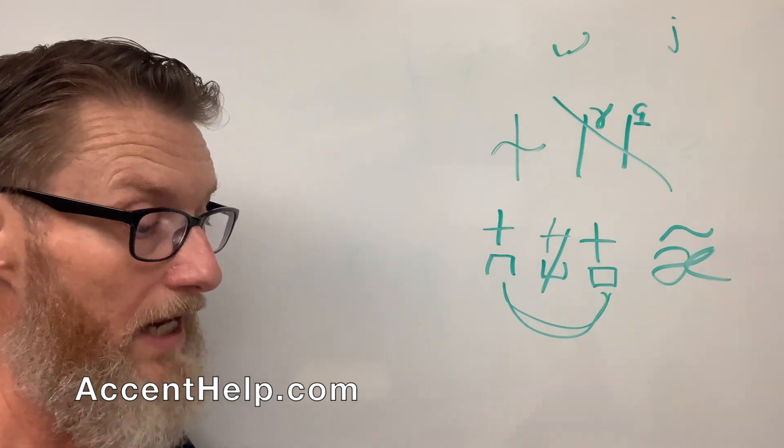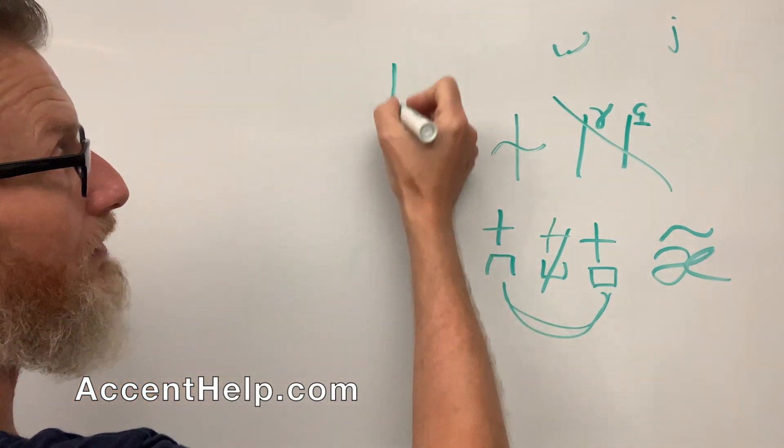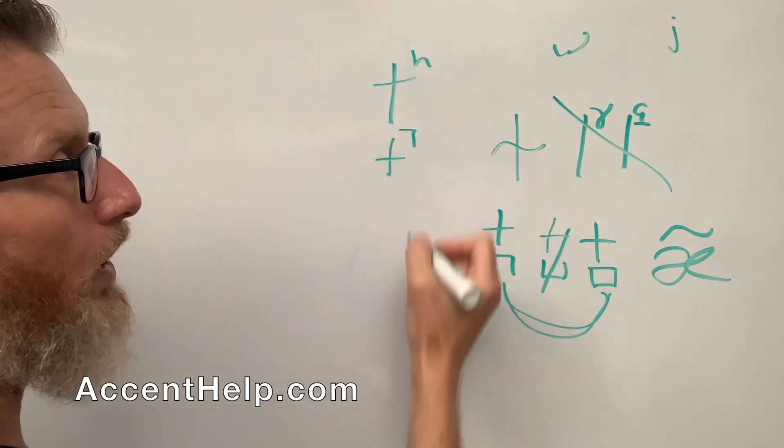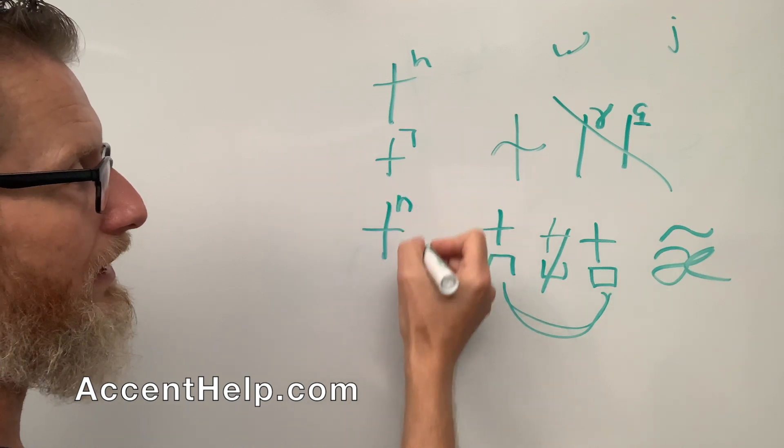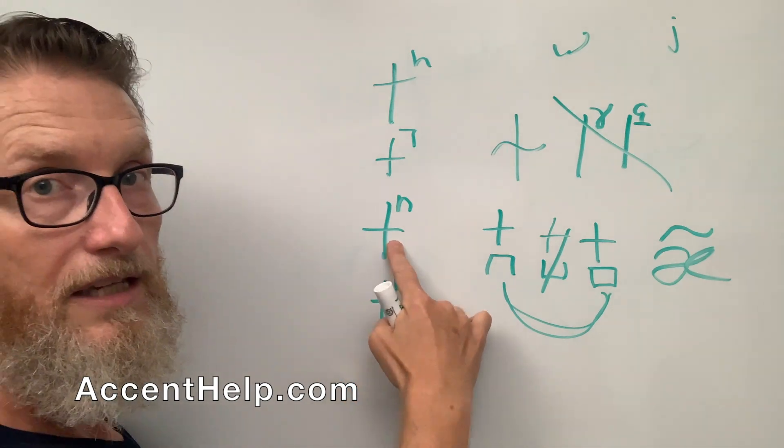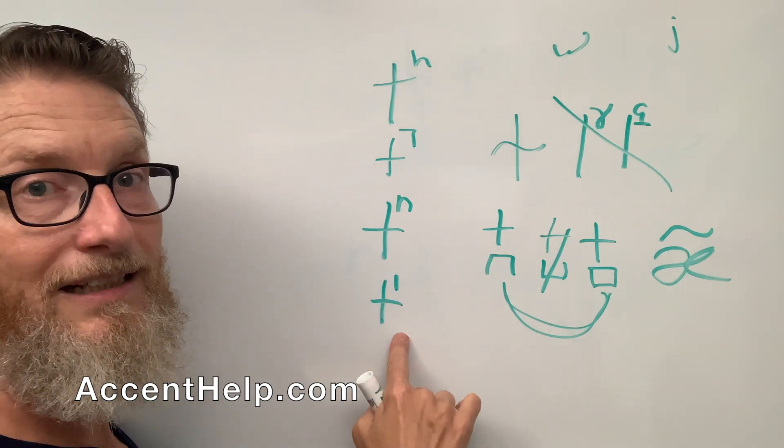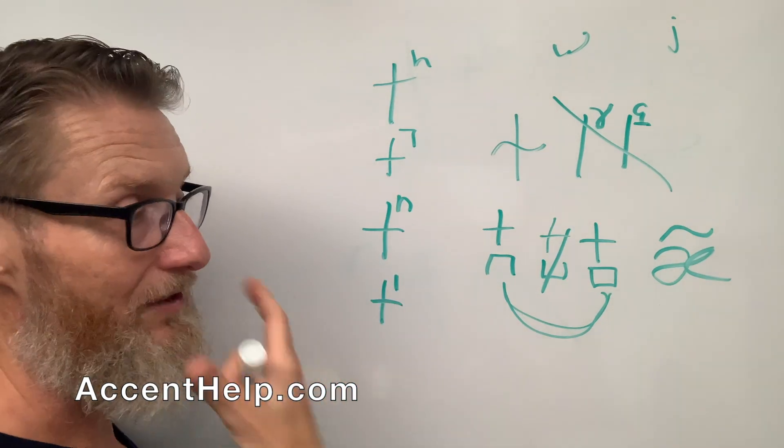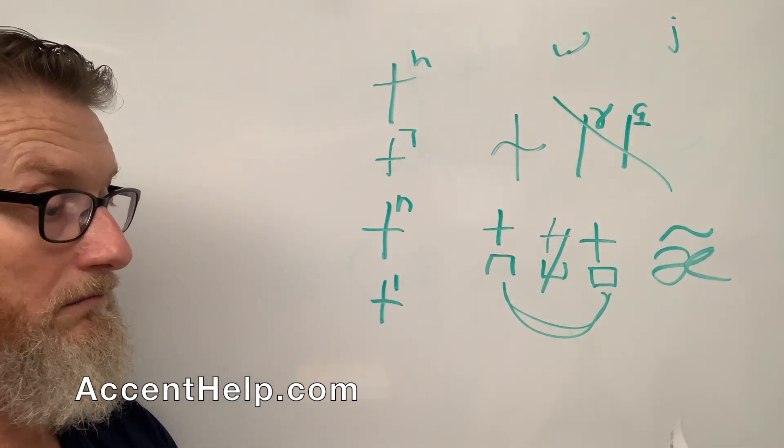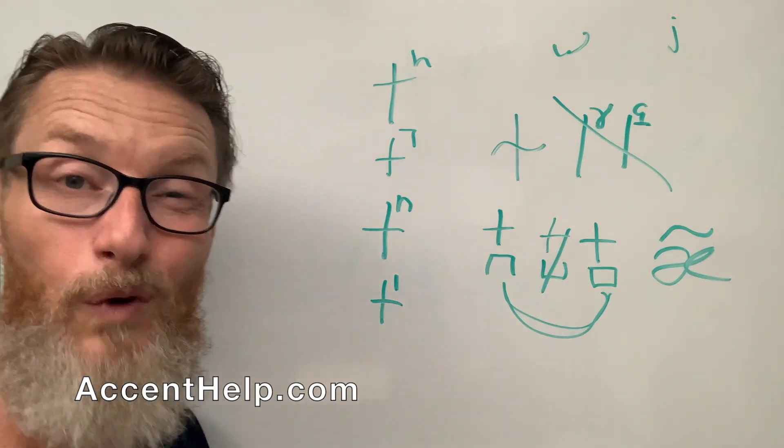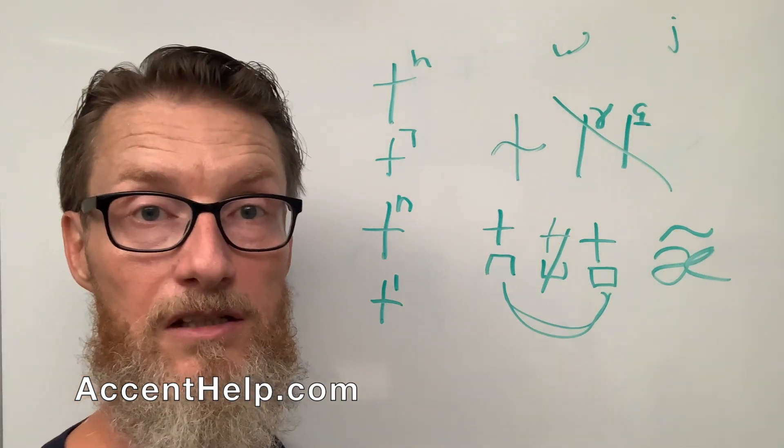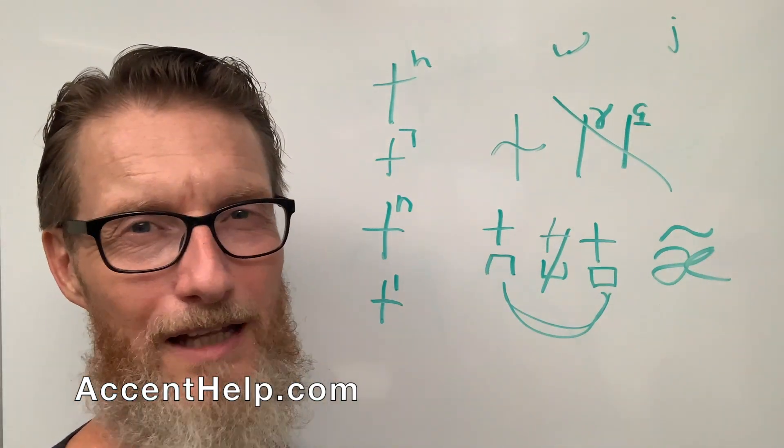And then we've got some other ones that we've used, which I mentioned about aspiration. Well, we can get no audible release. And I also talked about how we can get a nasal release or a lateral release, where we get something like button or little, where we release it around the side, or we release it through the nose. Those are the diacritics. So I went through the ones that I do use. And then I hit on the ones that I don't tend to use, just so that you've had some exposure to them.